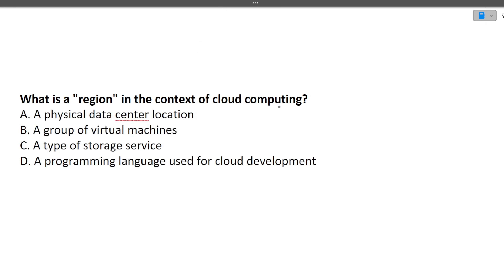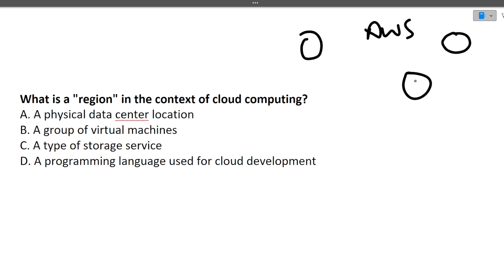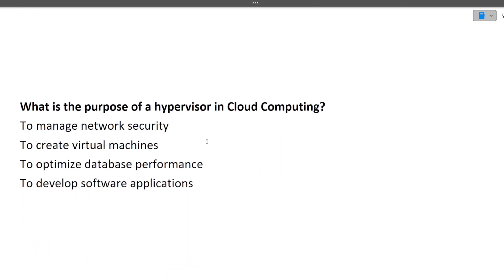The next question is: what is a region in the context of cloud computing? If you log into AWS, you will see there is a Mumbai region, an Australia Melbourne region, and a Sydney region. These regions are nothing but physical data centers where actual servers are present. A physical data center location where actual servers are present is known as a region in cloud computing.